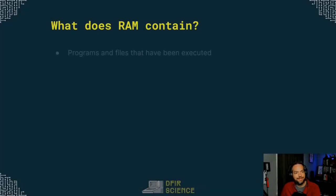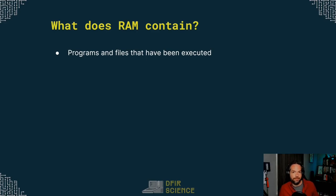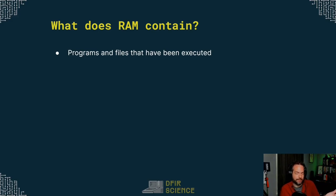A little bit more about what does RAM contain. It contains programs and files that have been executed. Think about your phone or your computer that you've been using today — how many programs did you run, how many apps did you open? Anything you did on that computer, whenever you open something up, the program is loaded into RAM, the RAM of your device.